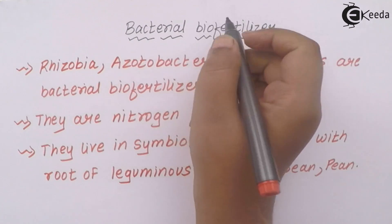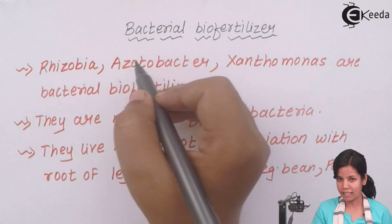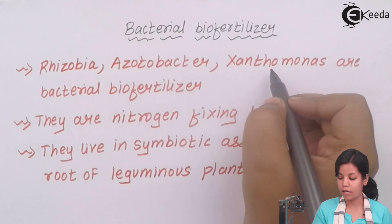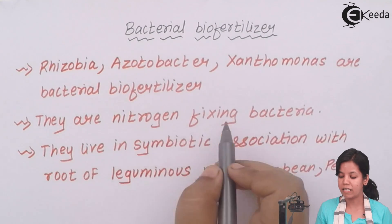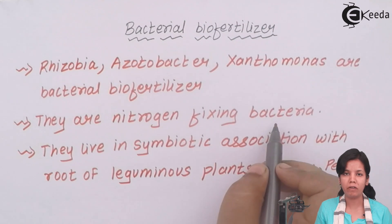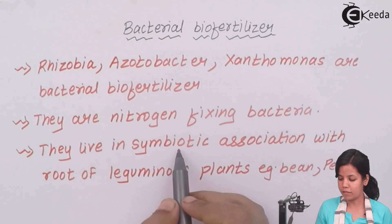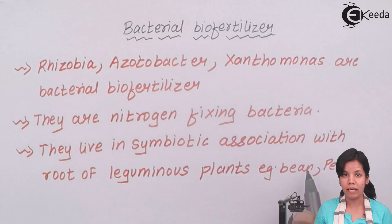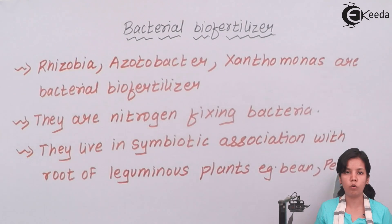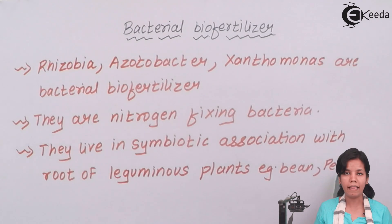Biofertilizers — examples include Rhizobia, Azatobacter, and Xanthomonas. These are bacterial biofertilizers and are nitrogen-fixing bacteria, meaning they help to fix nitrogen in leguminous plants. They live in symbiotic association with roots of leguminous plants, for example a pea plant or any of the dal varieties whether it is Moong, Matki. Leguminous plants require approximately 80% nitrogen when they grow.